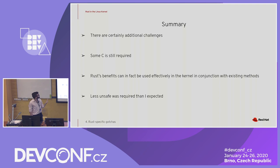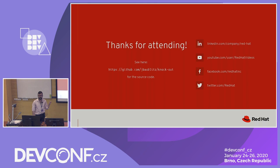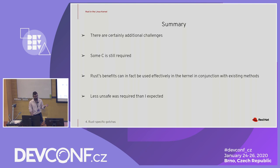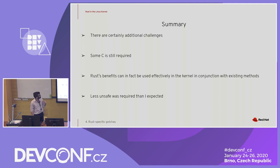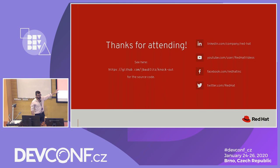In summary, there definitely are going to be some additional challenges using Rust, and some C is definitely still required. But Rust's benefits really can be used effectively in the kernel — we can get a lot of things for free in terms of resource management and cleanup without really a performance hit. Ultimately, there was a whole lot less unsafe than I thought was initially going to be required. Here is the link for my source code if you want to take a look through that and see more.